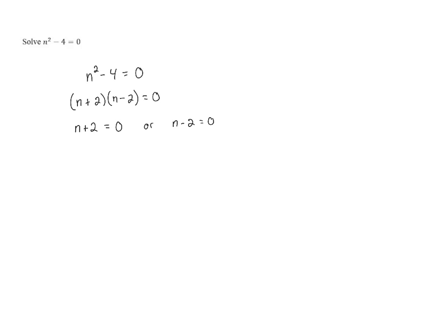And we need to get n alone. So we can subtract 2 on both sides in the first equation. That gives us n equals negative 2. And in the other equation, we need to add 2 to both sides. That gives us n equals positive 2.